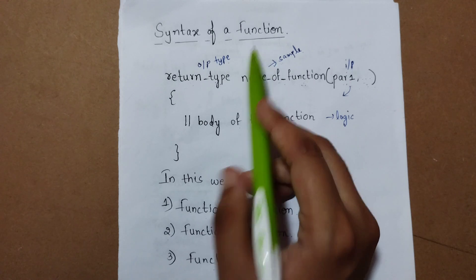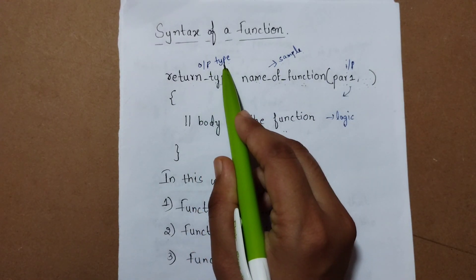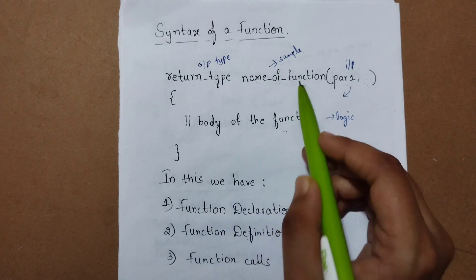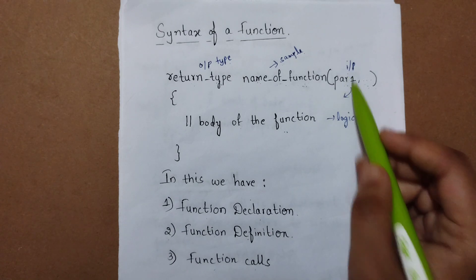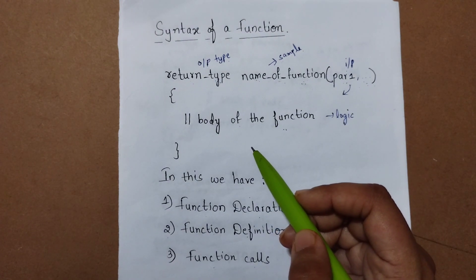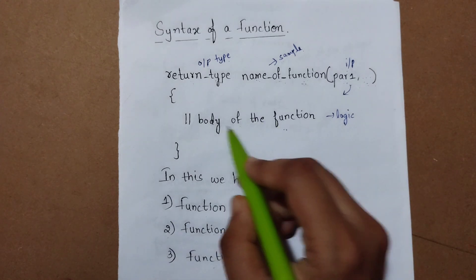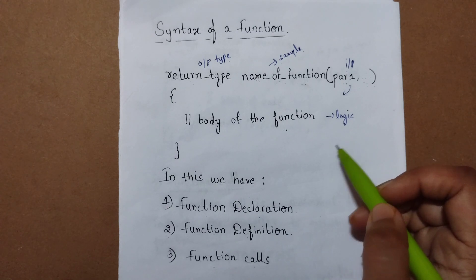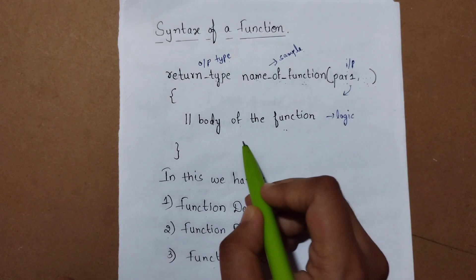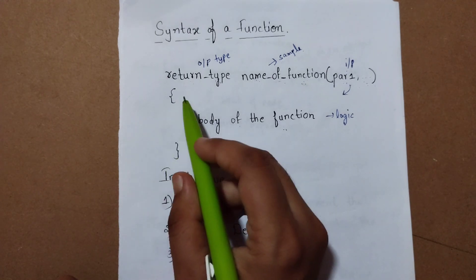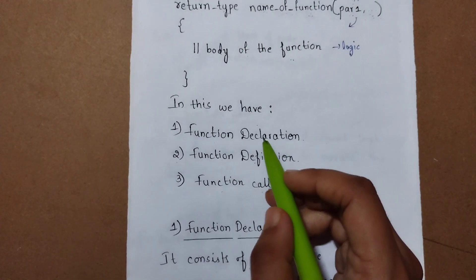The syntax of a function consists of a return type, name of the function, and parameters. The return type is the output type. The function name can be anything — in this case I'm taking my function name as 'sample'. Parameters are the input to the function. In the body of the function, logic can be written — like sum of two numbers, palindrome logic, whatever you want. After performing the specific task, you get an output, which should be returned.